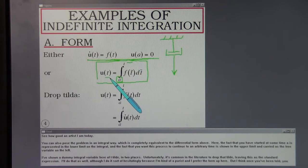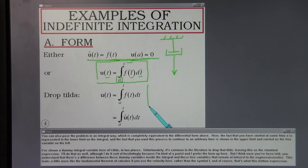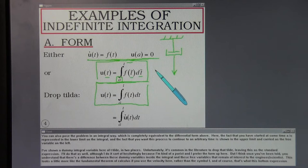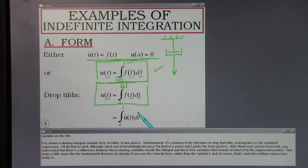You can also pose the problem in an integral form which is completely equivalent to the differential form above. Here the fact that you have started at some time a is represented in the lower limit on the integral. And the fact that you want this process to continue to an arbitrary time is shown in the upper limit and carried as the free variable on the left. I've shown a dummy integral variable here of t tilde. Unfortunately, it's common in the literature to drop that tilde, leaving this as the standard expression.